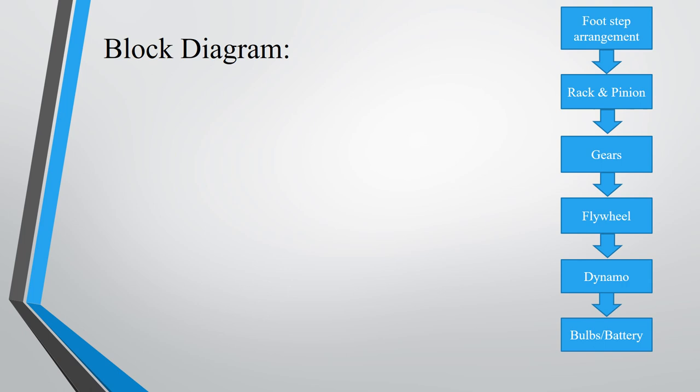The block diagram is shown here. There is a footstep arrangement, then there is a rack and pinion mechanism. The gears are matched with it. There is a flywheel, dynamo and there are some bulbs which show that electricity is being produced. Force is generated on the footstep arrangement.